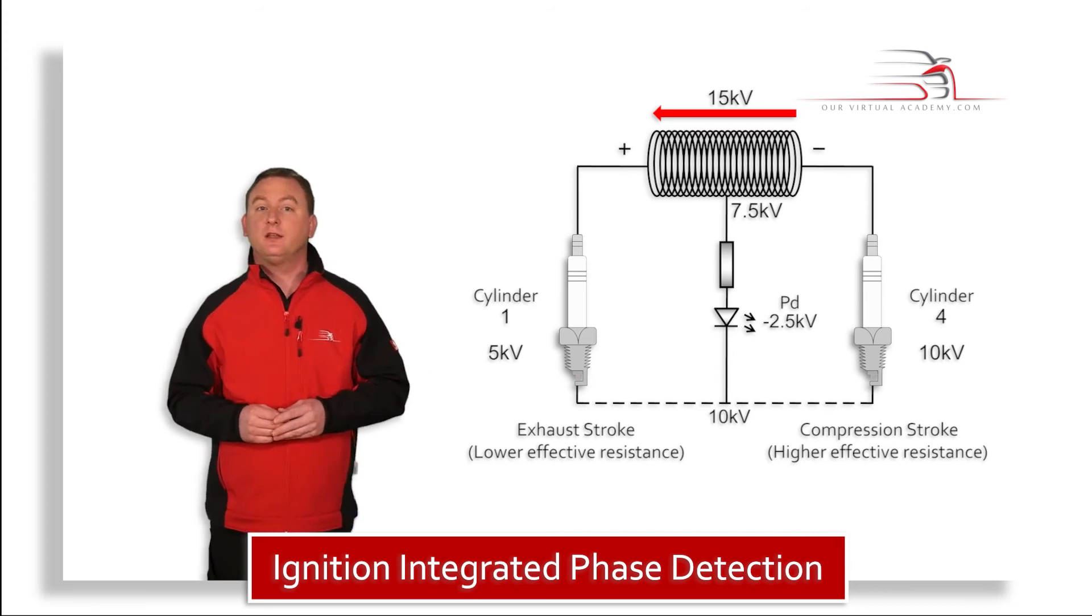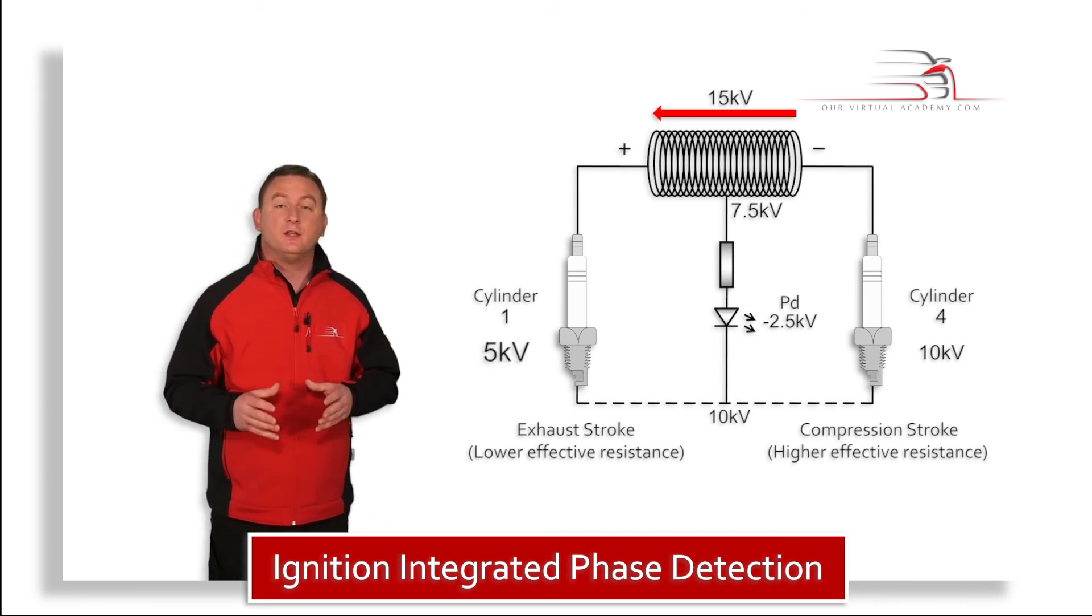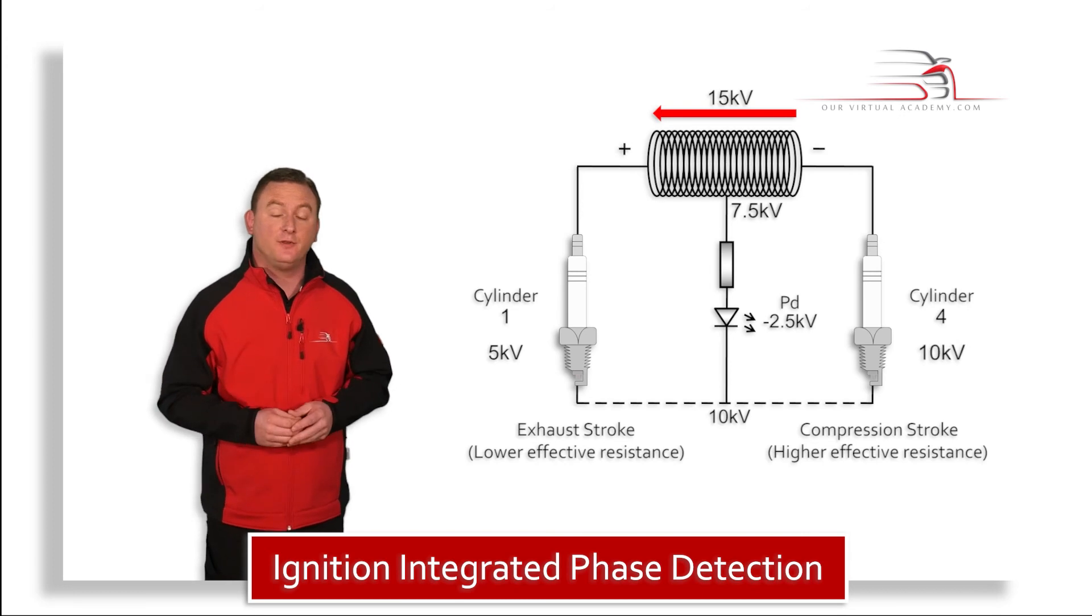Here we can see that cylinder number one is consuming five kilovolts of pressure, leaving 10 kilovolts for the opposite plug.